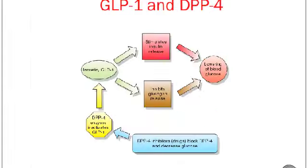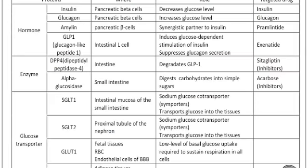For example, GLP-1 (glucagon-like peptide 1) is a hormone secreted from the intestine. It not only induces insulin secretion but also suppresses glucagon secretion. However, once in circulation, GLP-1 has a very short half-life of less than two minutes due to rapid degradation by the enzyme DPP-4 (dipeptidyl peptidase 4). Therefore, both GLP-1 analogs and DPP-4 inhibitors can be good oral hypoglycemic agents.